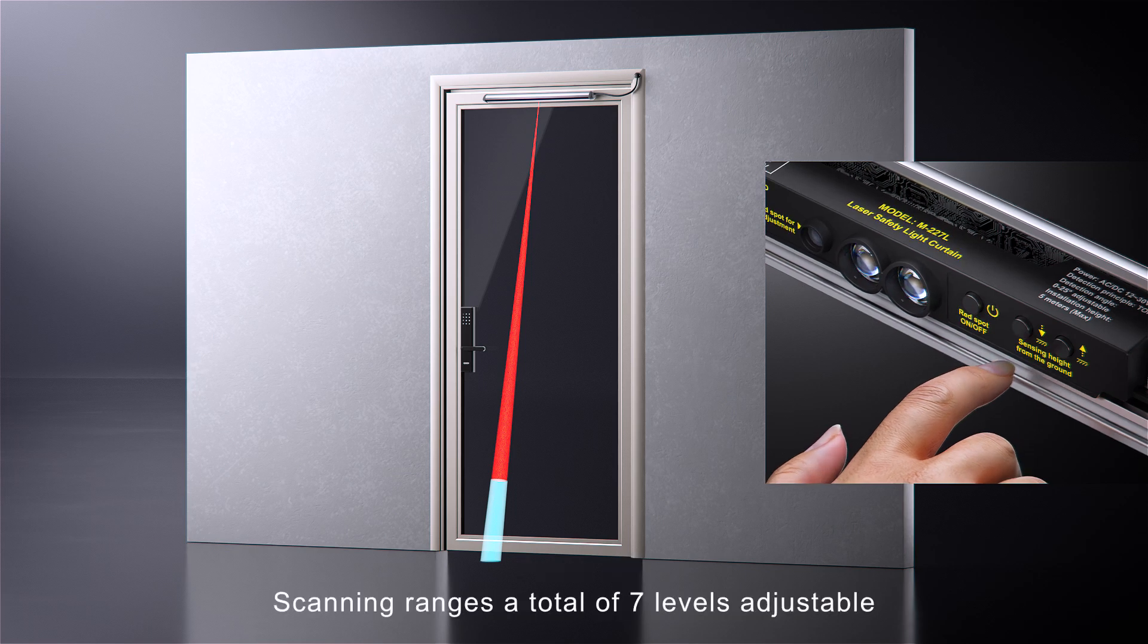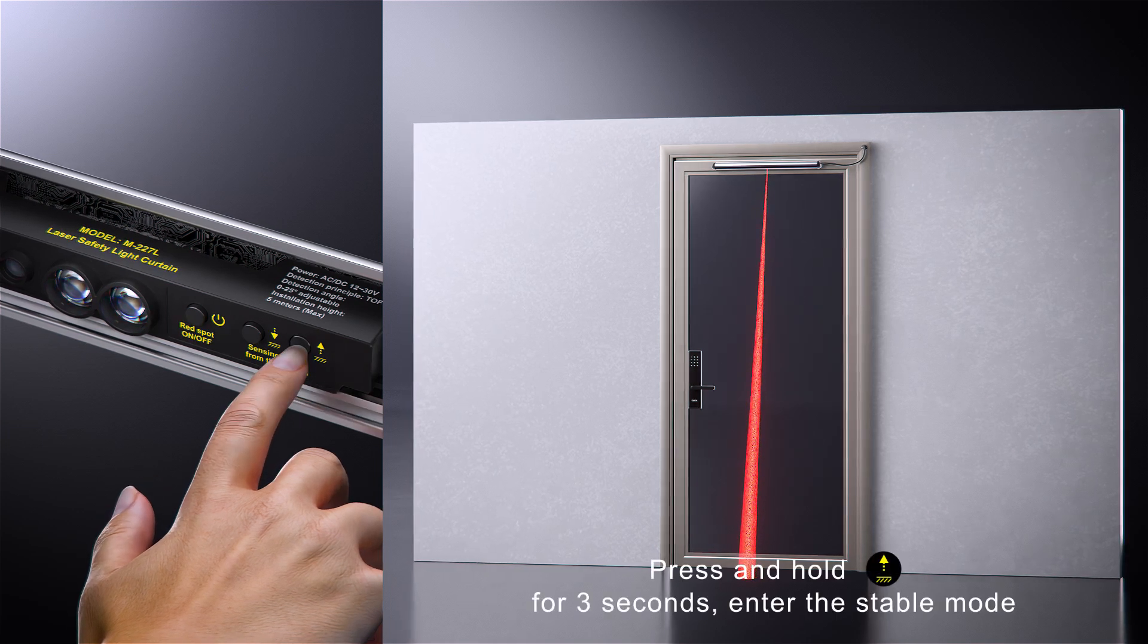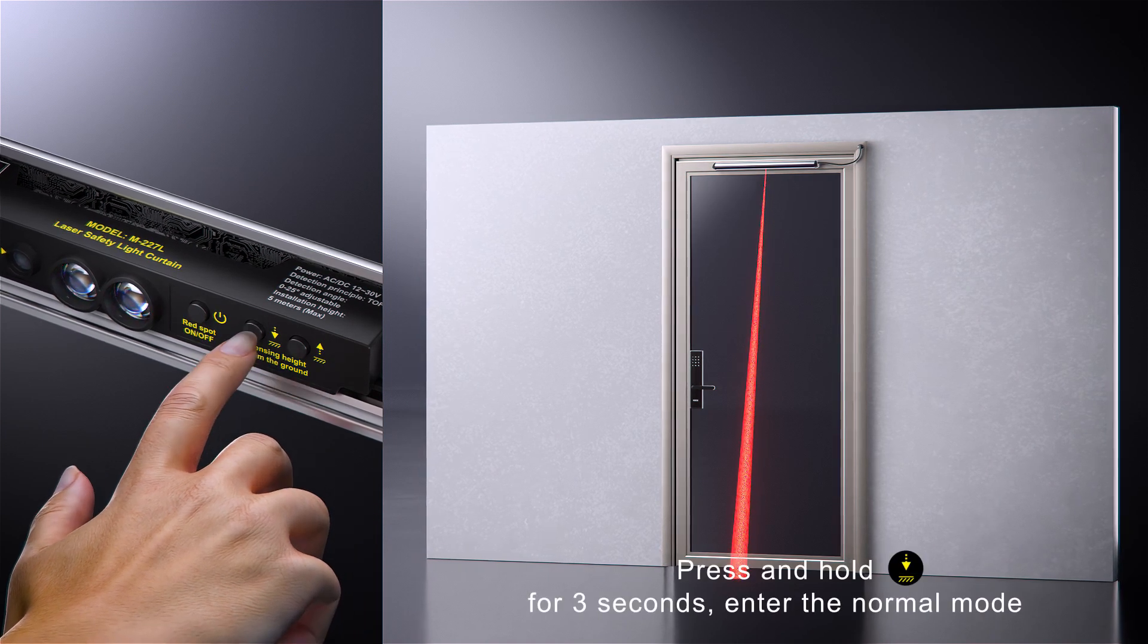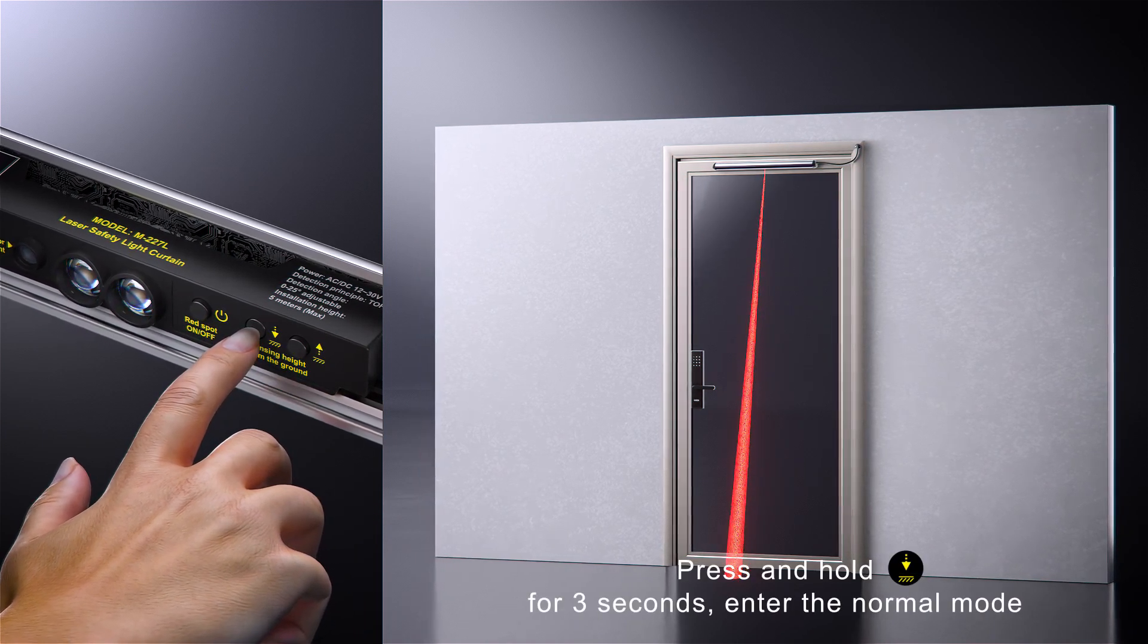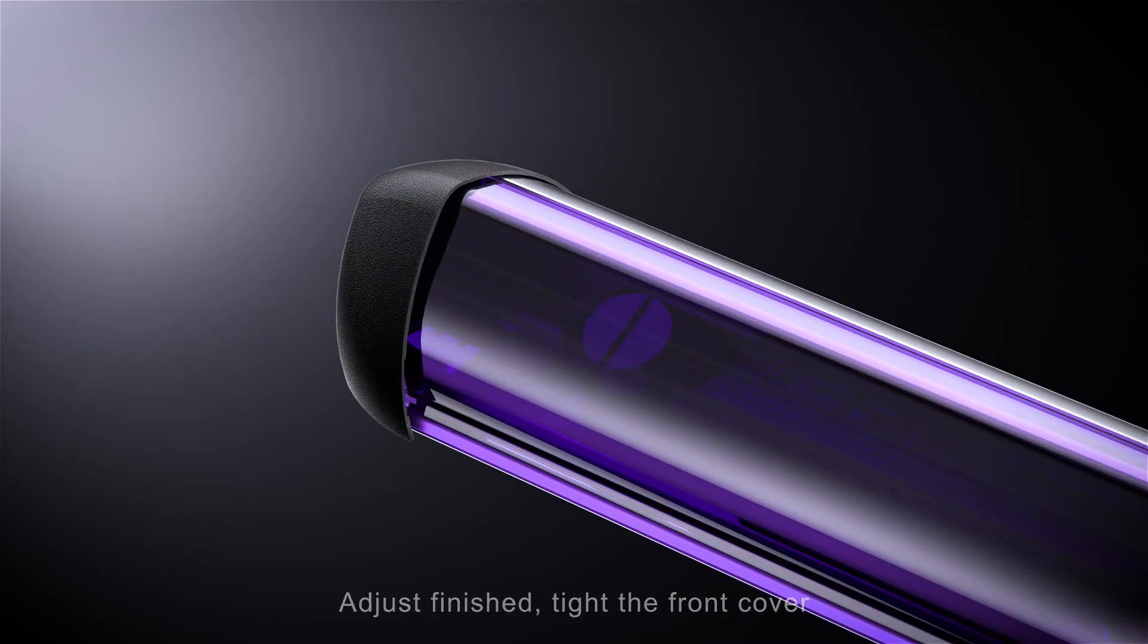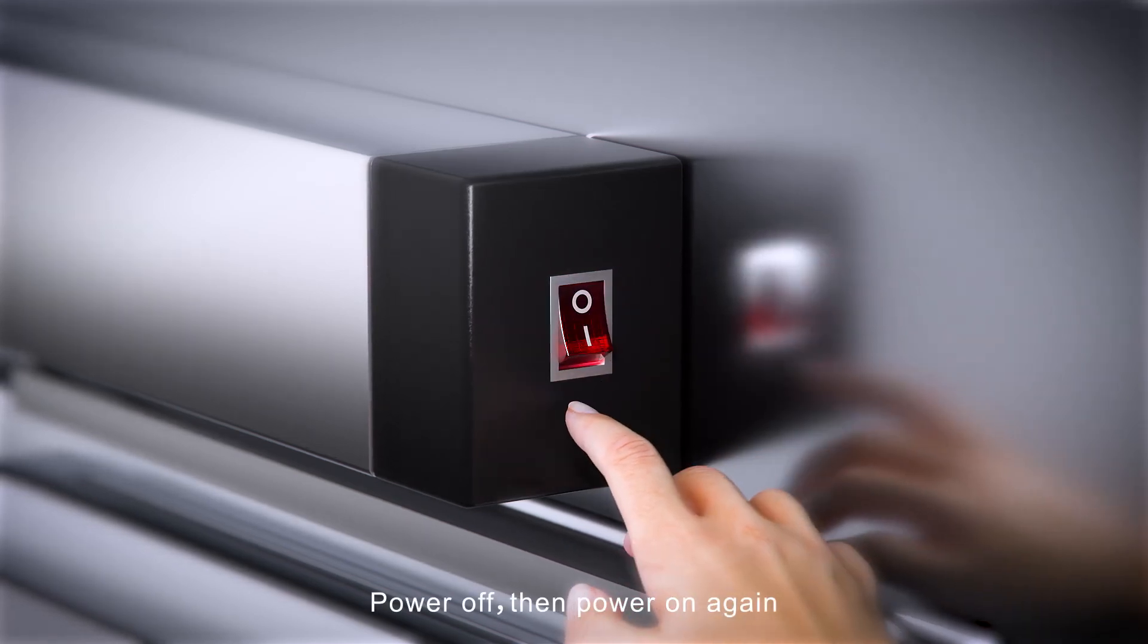Scanning range is a total of 7 levels adjustable. Press ON-OFF button for 3 seconds to enter the stable mode. Press ON-OFF button for 3 seconds to enter the normal mode. Adjust finished, tighten the front cover. Power OFF then power ON again.